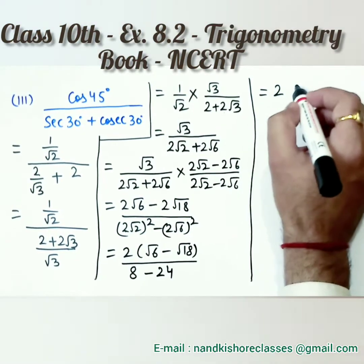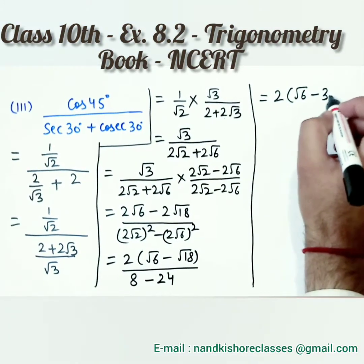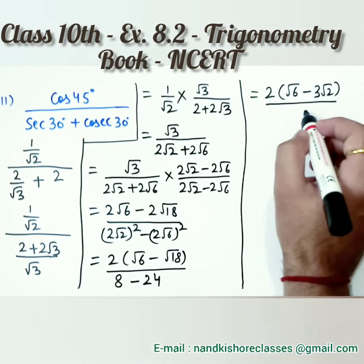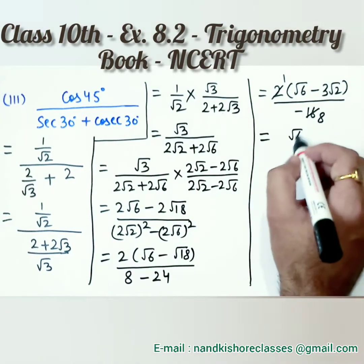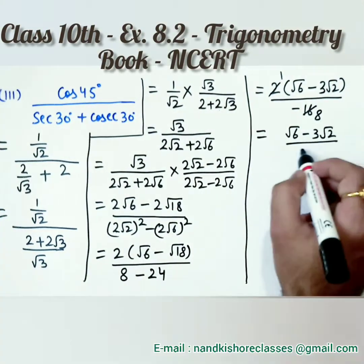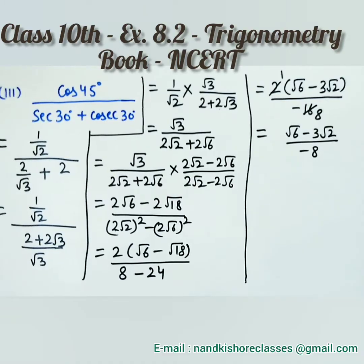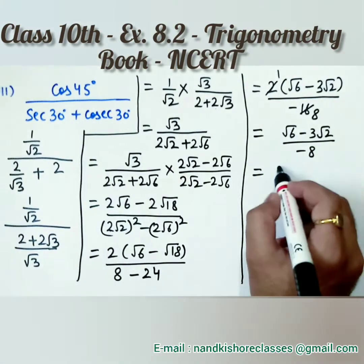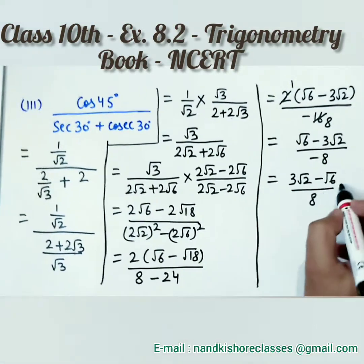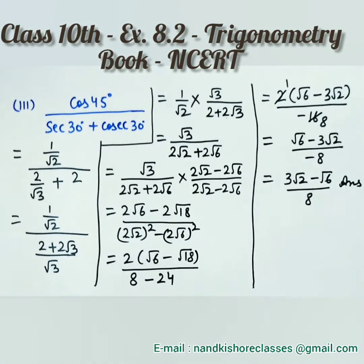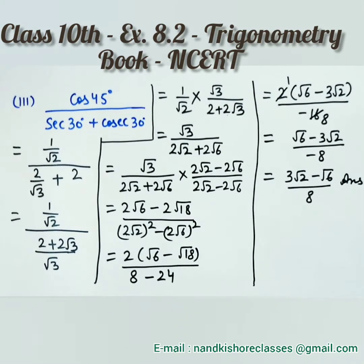Root 18 can be written as 3 root 2. In the denominator, using a² − b² we get 8 minus 24, which is minus 16. So we have (root 6 − 3 root 2) over minus 16, which simplifies to (root 6 − 3 root 2) over minus 8. Multiplying numerator and denominator by minus 1, the final answer for Part 3 is (3 root 2 − root 6) over 8.